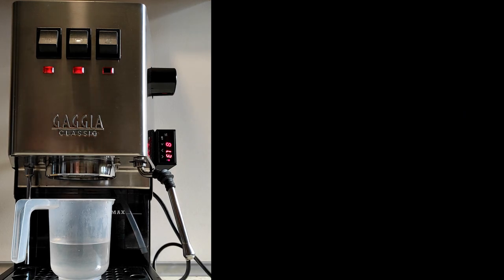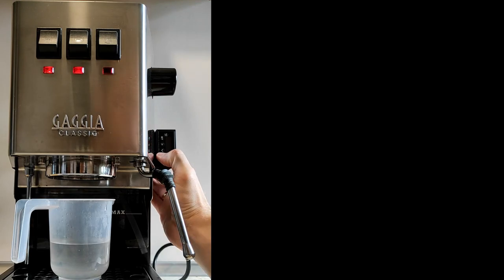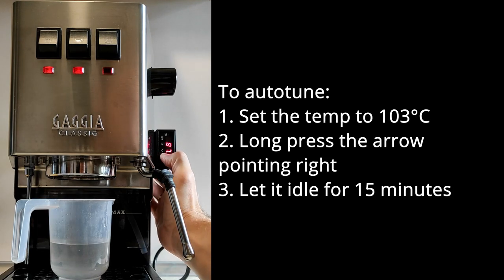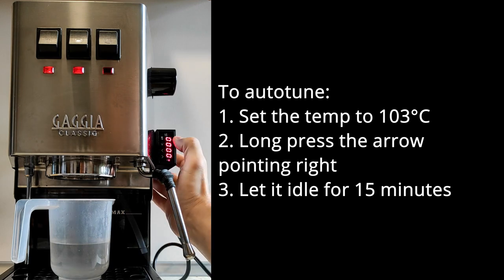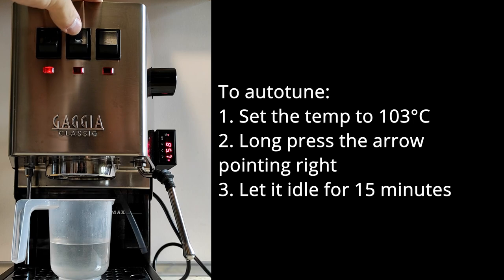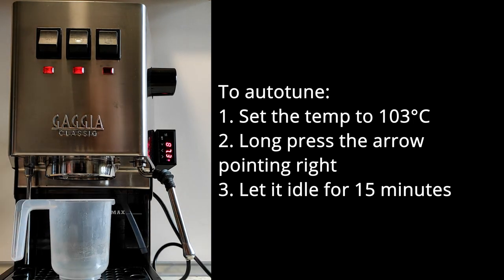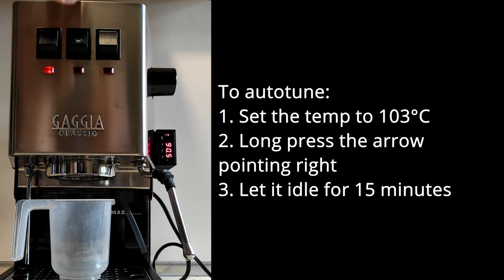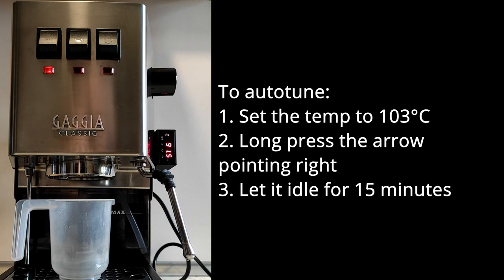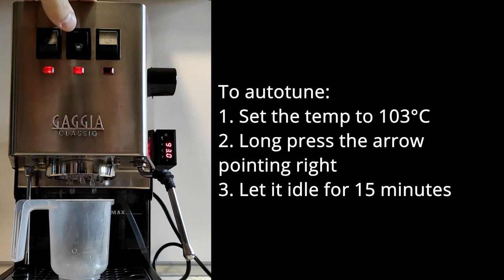I did know that the PID needs to auto-tune its own internal algorithms in order to learn the boiler and heater characteristics. What I didn't know was that the process doesn't start automatically, at least it didn't in my case. In order to start auto-tuning, set your PID to 103 degrees and long press the second button, the arrow pointing right. The AT light will start flashing and the PID will spend about 15 minutes learning your Gaggia. And yes, 103 degrees is a good starting point, accounting for the discrepancy between the temp measured at the sensor and the temperature of the water inside the boiler. You might want to adjust it later to suit your coffee better.